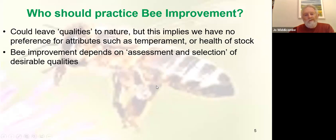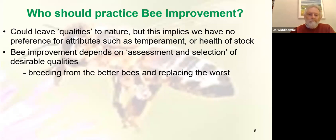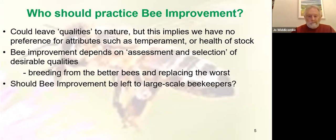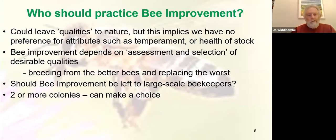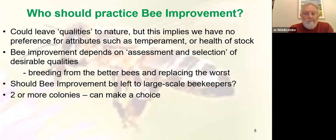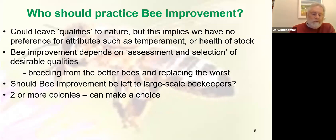Where do you start? It depends on assessment and selection of desirable qualities. Think about what qualities you want in your bees, monitor your colonies and assess them. To make progress in bee improvement, you breed from the better bees and replace the worst — that's a simple rule of selection for any animal or plant. Should we leave it to large-scale beekeepers who have much more influence on their bee populations? If you've got two or more colonies, you can make a choice — you might think one colony is a pleasure to work with and the other is a nightmare, and you'd rather reproduce from the nice-tempered one.